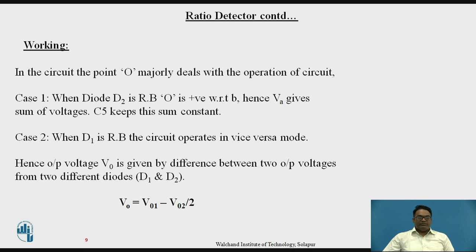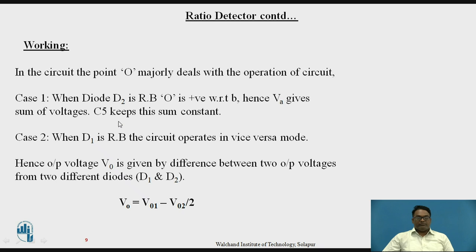For the working, we consider two cases, with point O as the operating point of the circuit. In Case 1, diode D2 is in reverse bias. Hence, point O is positive with respect to point B connected at the RC circuit. The output VA is the sum of voltages, and capacitor C5 connected across the RC circuit keeps this sum of voltages constant.